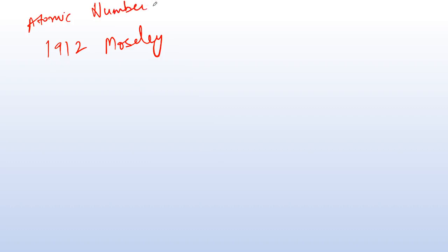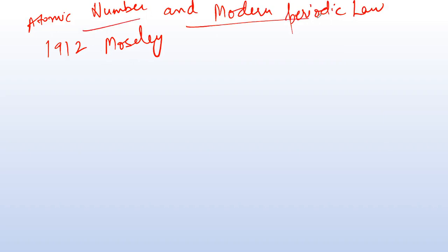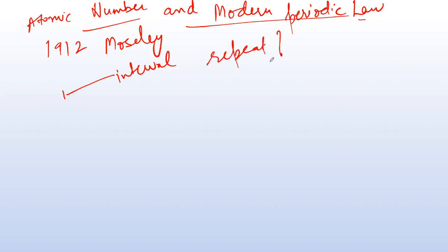In 1912, Henry Moseley, an English physicist, studied x-ray emitted frequencies and proposed a law based on atomic number. This led to the modern periodic law. In the next lectures, I will discuss atomic number, modern periodic law, and justifications. I will also explain what causes periodicity — why properties repeat after a certain interval — and discuss the modern periodic table with its many groups and periods.